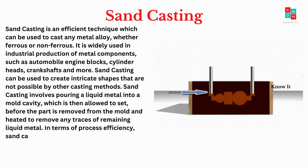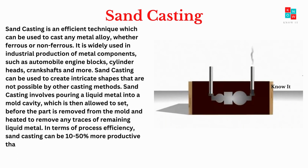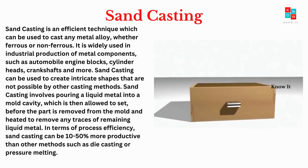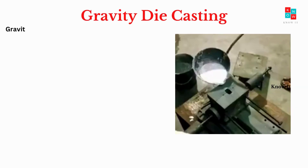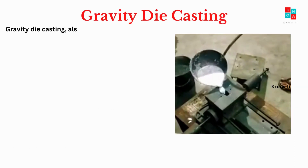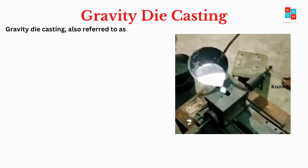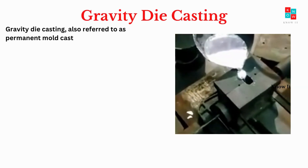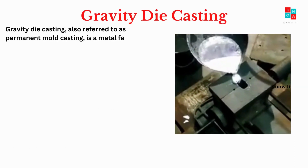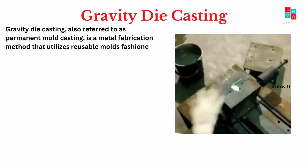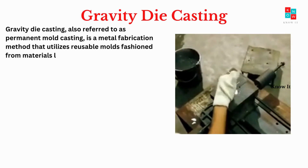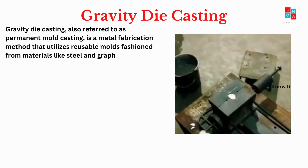In terms of process efficiency, sand casting can be 10-50% more productive than other methods such as die casting or pressure melting. Gravity die casting, also referred to as permanent mold casting, is a metal fabrication method that utilizes reusable molds fashioned from materials like steel and graphite.